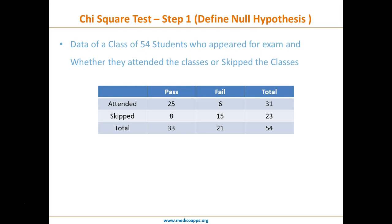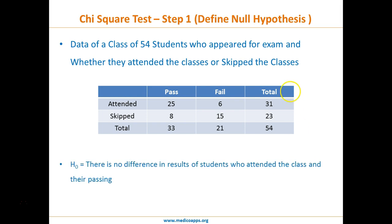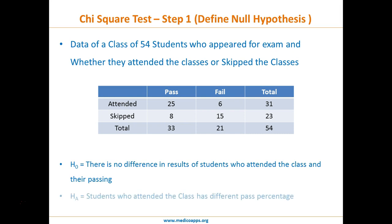The first step of any hypothesis testing is defining the null hypothesis. Our null hypothesis is that there is no difference in results based on whether students attended or skipped the class. The alternate hypothesis is that students who attended the class have a different pass percentage.